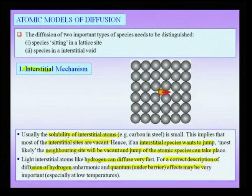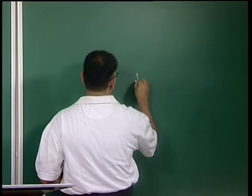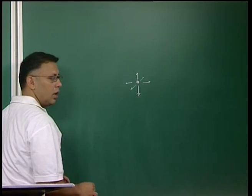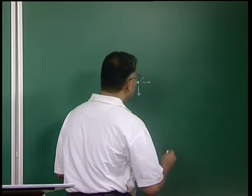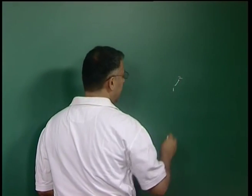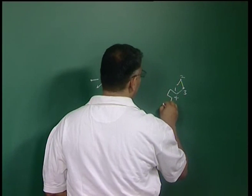An atom sitting in an interstitial site has many options to jump. At any finite temperature this atom is vibrating in all three dimensions, and when vibrating there is a chance it will jump. Suppose it jumps to a neighboring interstitial position from site 1 to 2, then further from 2 to 3, then to site 4 — this undergoes what is called a random walk process.